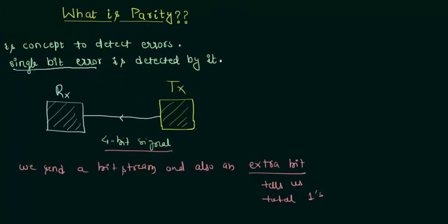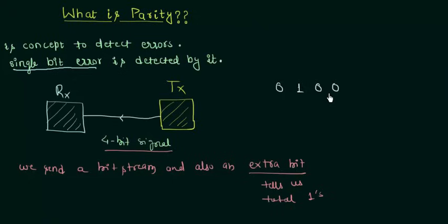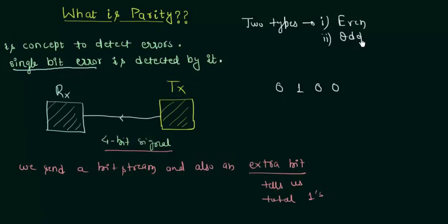Let's say in this 4-bit transmitted signal we have a single one, so the signal is 0 1 0 0. You can see the number of 1s in this bit stream is 1, which is odd. If it were even we would do different operations. So depending upon this, there are two types of parity: even parity and odd parity.